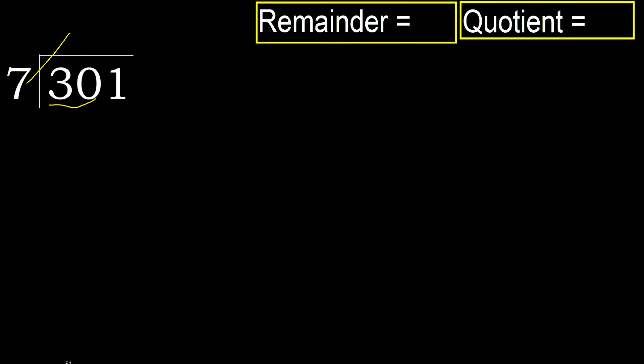7 multiplied by which number is nearest to 30 but not greater? 7 multiplied by 5 is 35, which is greater. 7 multiplied by 4 is 28, which is not greater. Subtract: 30 minus 28 is 2.